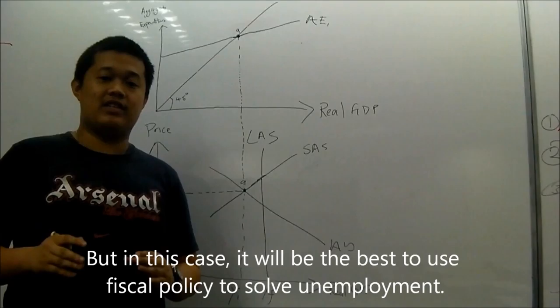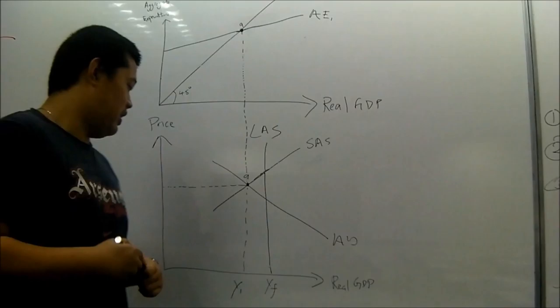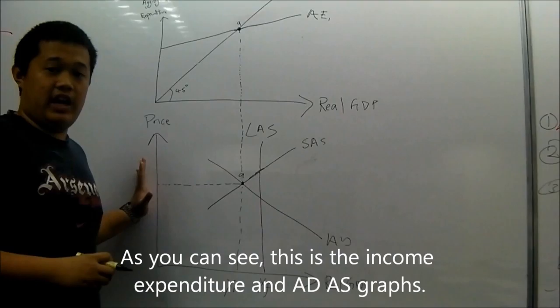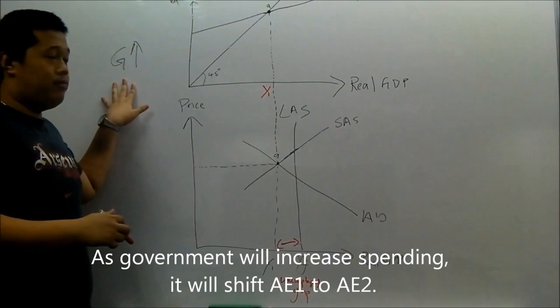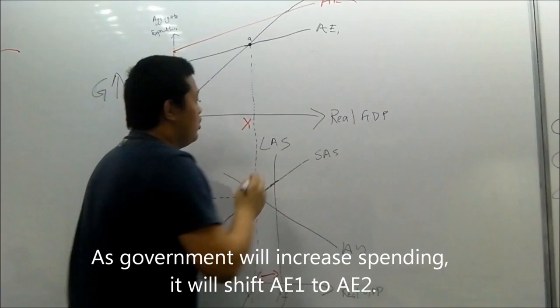Since the economy is in a recession, and from the statement unemployment can only be resolved by fiscal policy, it is not true. It also can be resolved by monetary policy, but in this case it will be best if we use fiscal policy to solve unemployment.